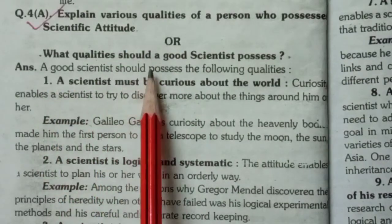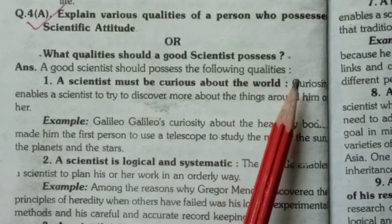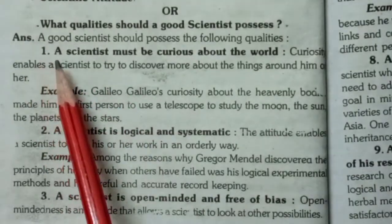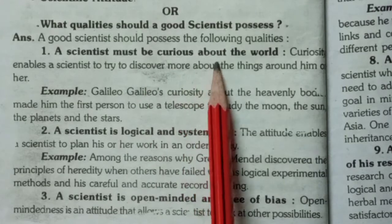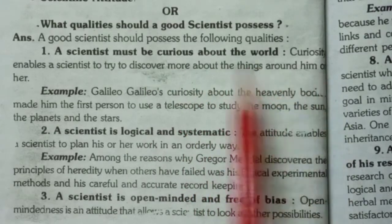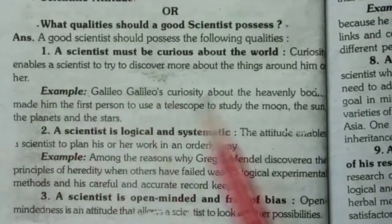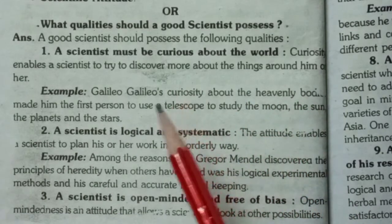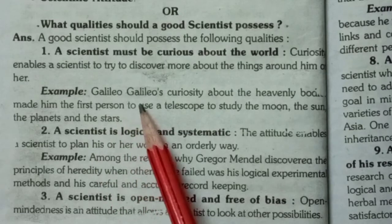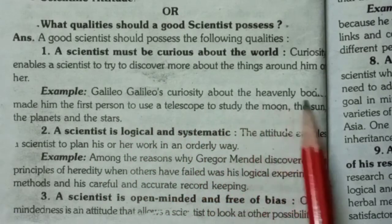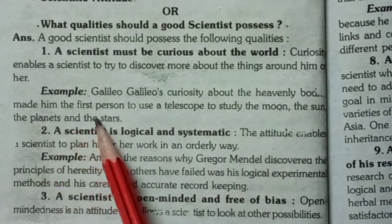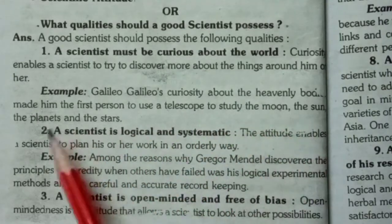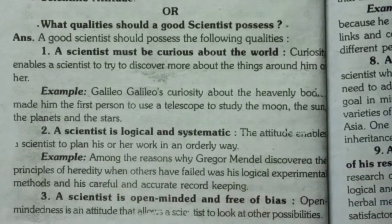What are the qualities a good scientist should possess? First of all, a scientist must be curious about the world. Curiosity enables scientists to try to discover more about the things around them. For example, Galileo Galilei's curiosity about the heavenly bodies made him the first person to use a telescope to study the moon, the sun, the planets, and the stars.